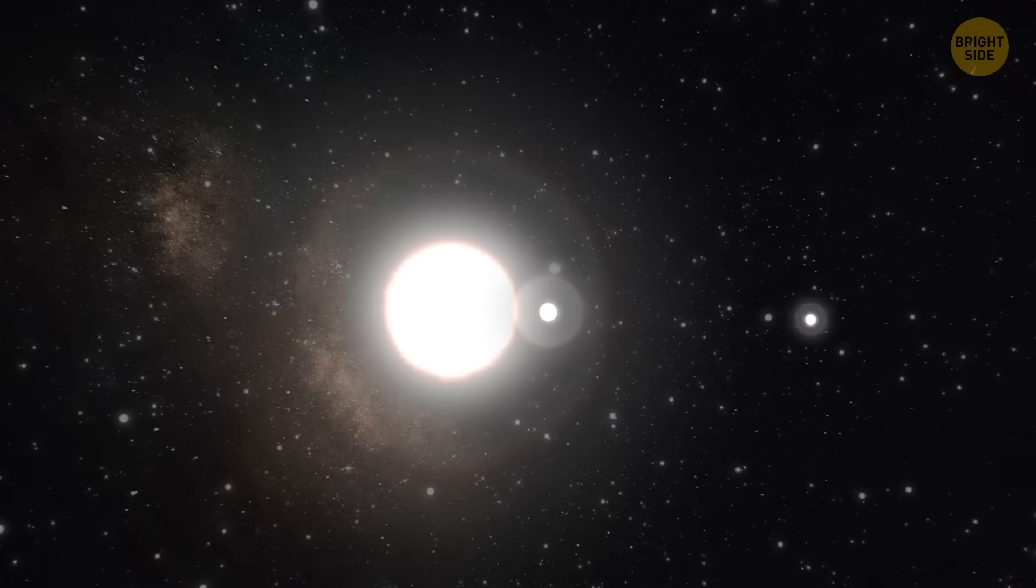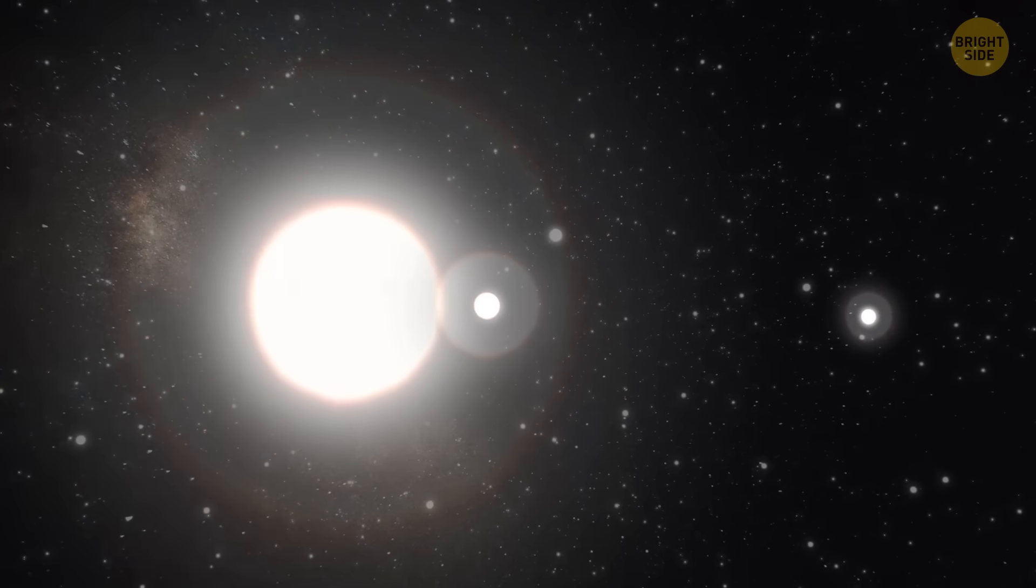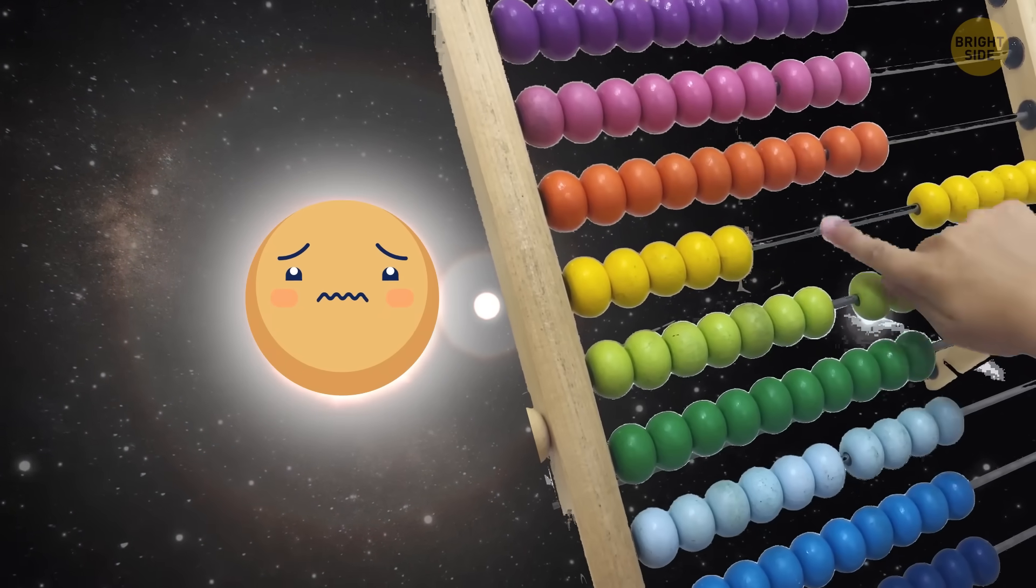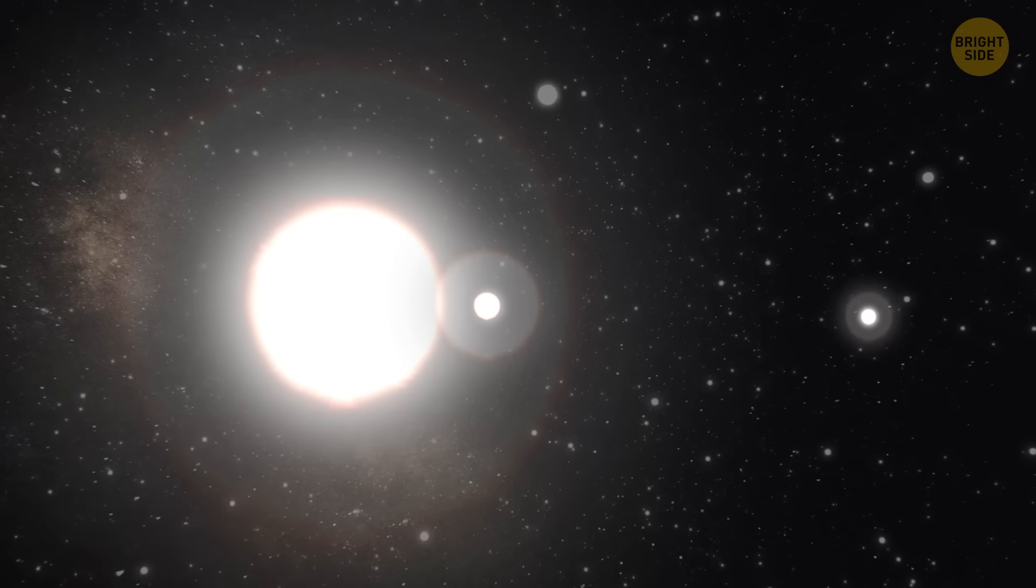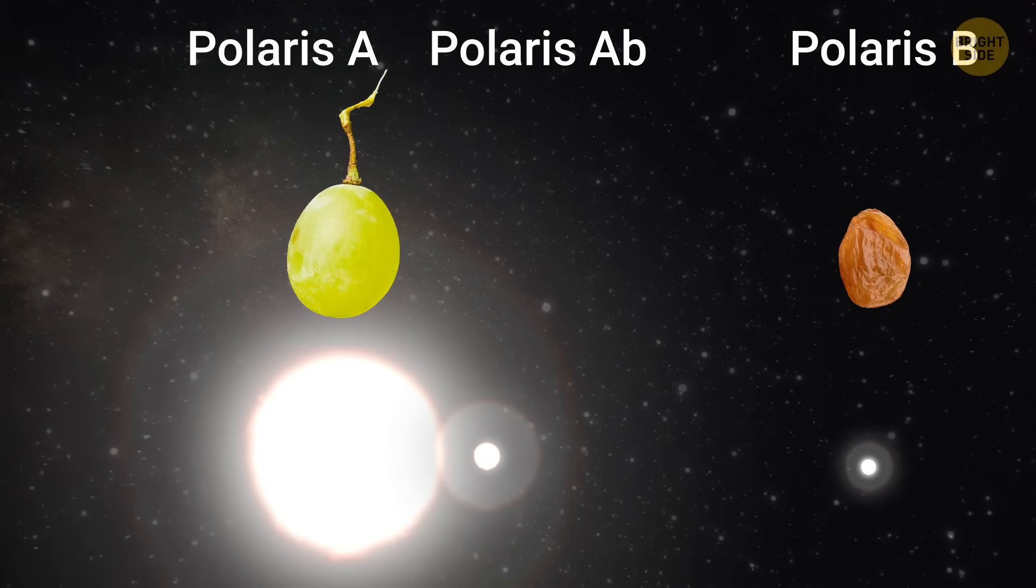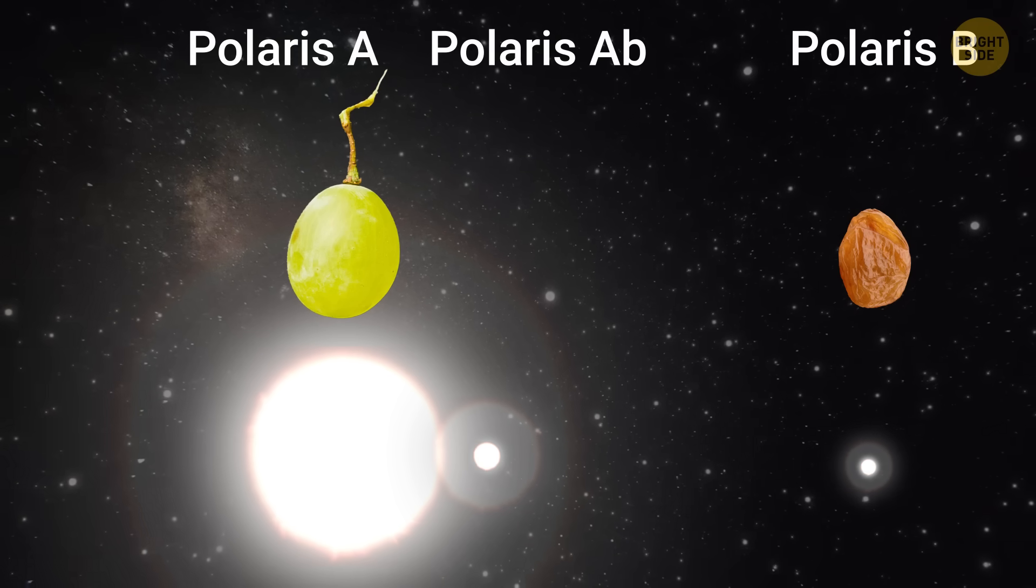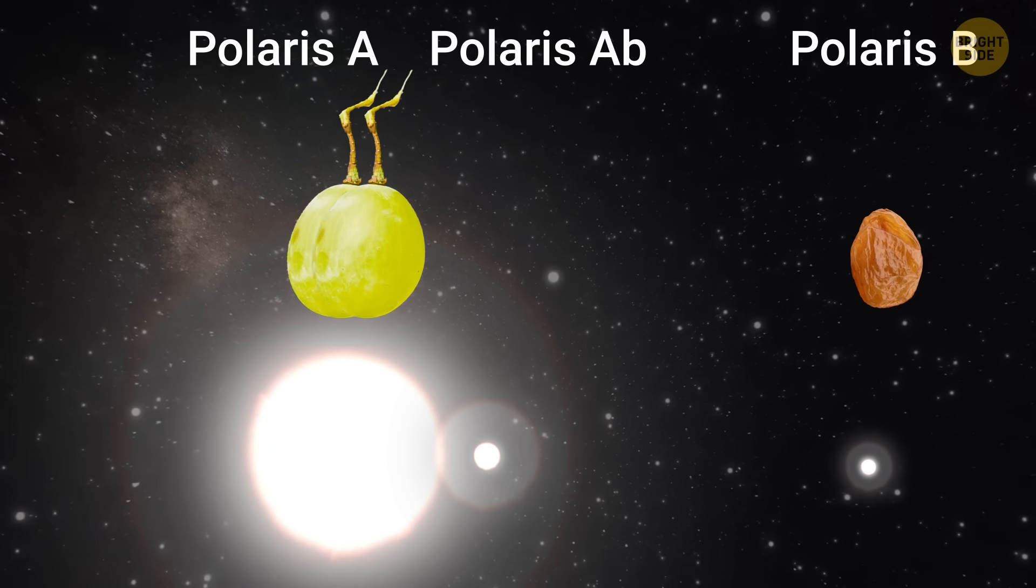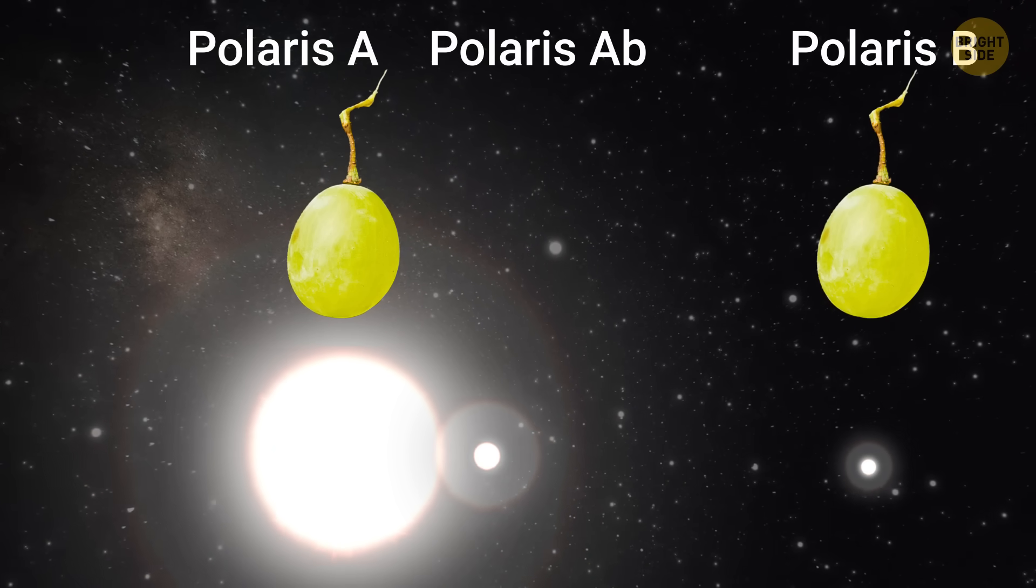But there's another reason why this star system is weird. After calculating the ages of the stars, researchers concluded that Polaris B is much older than its bigger sibling. But it's extremely unusual for a binary system. Normally, both stars are of the same age.